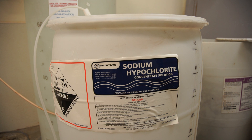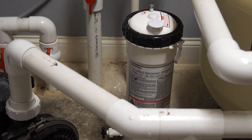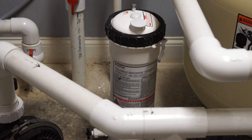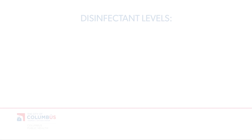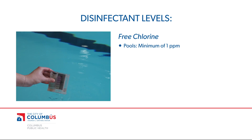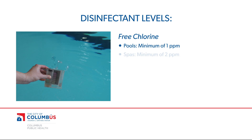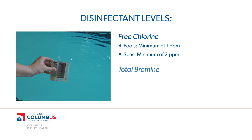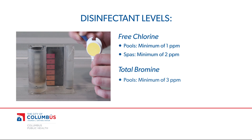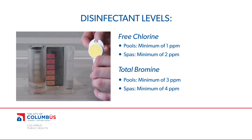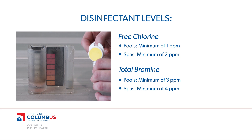It is important to maintain a proper disinfectant level of free chlorine or total bromine in your pool or spa at all times. Free chlorine must be maintained at a minimum of 1 ppm for pools and 2 ppm for spas. Total bromine must be maintained at a minimum of 3 ppm for pools and 4 ppm for spas.